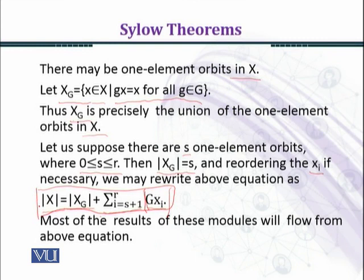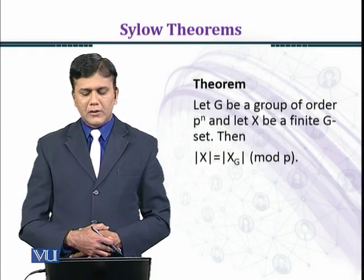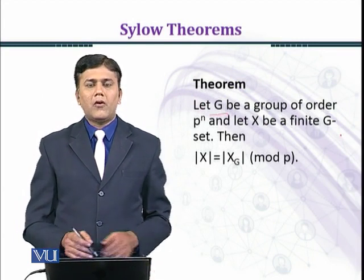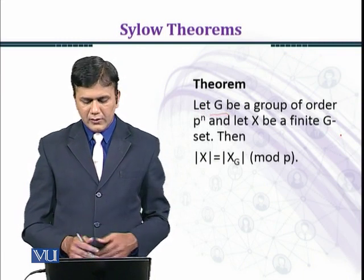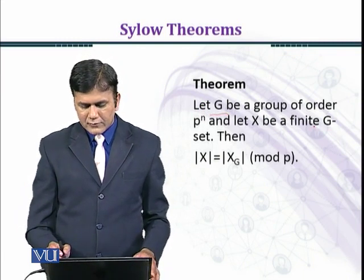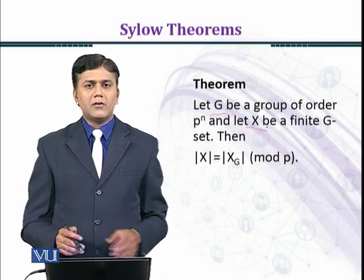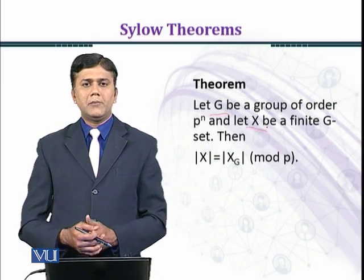Now let's state the theorem. Let G be a group of order p^n, and let X be a finite G-set, where p is a prime number. Then |X| ≡ |X_G| (mod p).